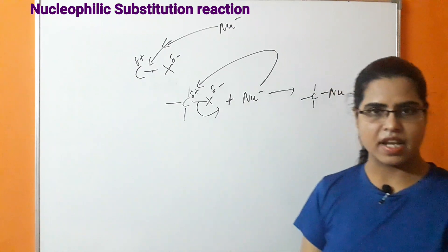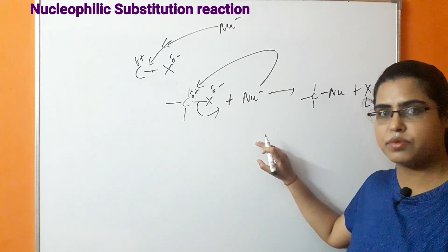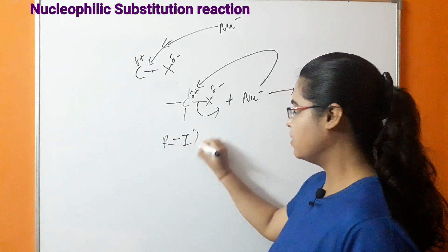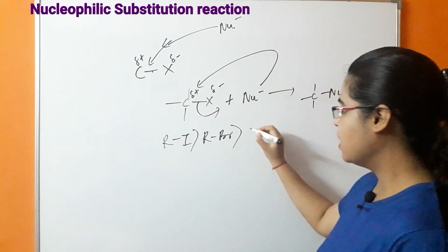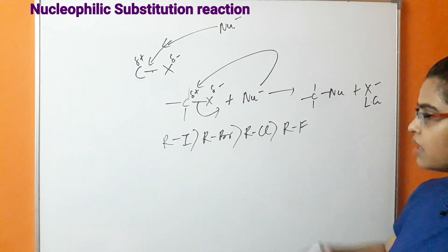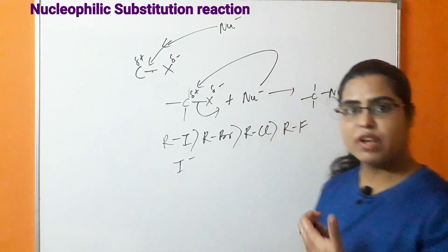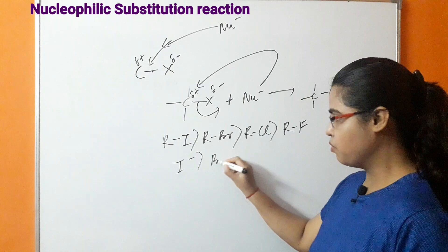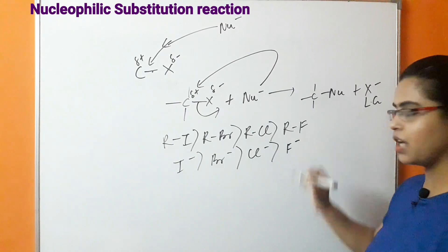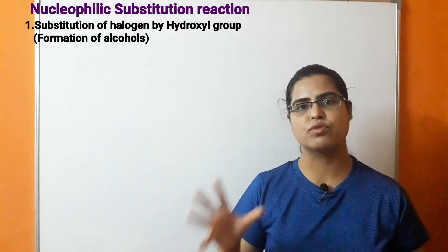The order of reactivity of alkyl halides towards nucleophilic substitution reaction is: most reactive is alkyl iodide, then alkyl bromide, then alkyl chloride, and least reactive is alkyl fluoride. Similarly, the order of departing group ability is: iodide ion leaves most easily, then bromide, then chloride, and the least departing group is fluoride ion.